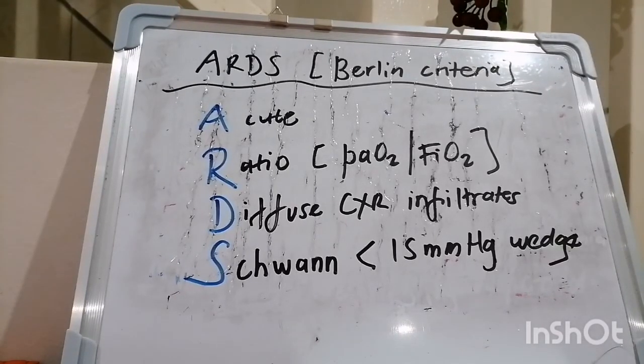So guys, we know that acute respiratory distress syndrome is a clinical syndrome of severe lung injury due to systemic inflammation. To diagnose ARDS in someone, we need to meet the Berlin criteria as follows.